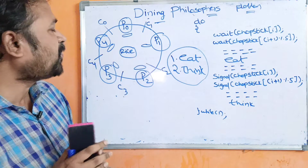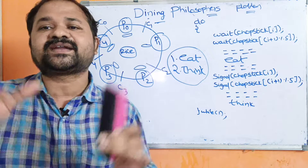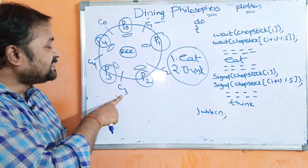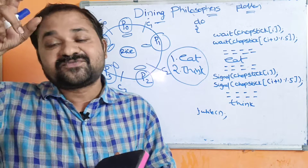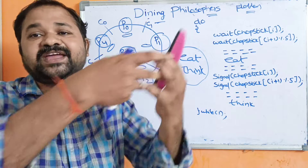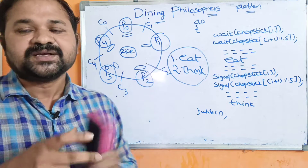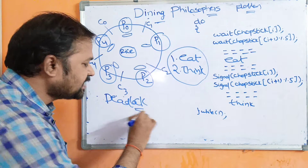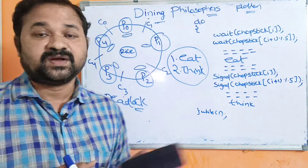Suppose all philosophers become hungry simultaneously and each philosopher gets one fork: P0 acquires C0, P1 acquires C1, P2 acquires C2, P3 acquires C3, P4 acquires C4. Now each philosopher will wait for another fork, but that fork was already allotted to some other philosopher. There is a possibility that each philosopher may wait for that chopstick for a longer period of time, and because of starvation, a philosopher may die. This problem is called the deadlock problem.